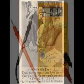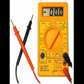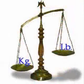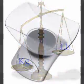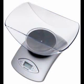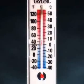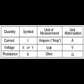To be able to make meaningful statements about electrical quantities in circuits, we need to be able to describe their quantities in the same way that we might quantify mass, temperature, volume, length, or any other kind of physical quantity. For mass, we might use the units of pound or gram. For temperature, we might use degrees Fahrenheit or degrees Celsius.